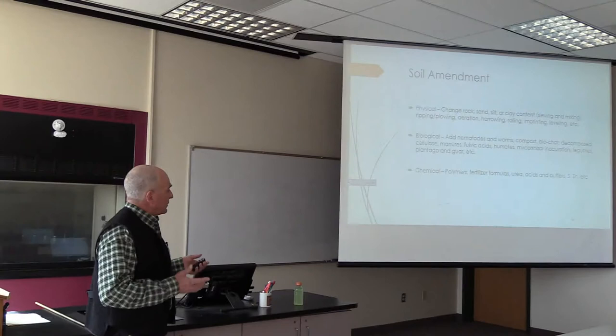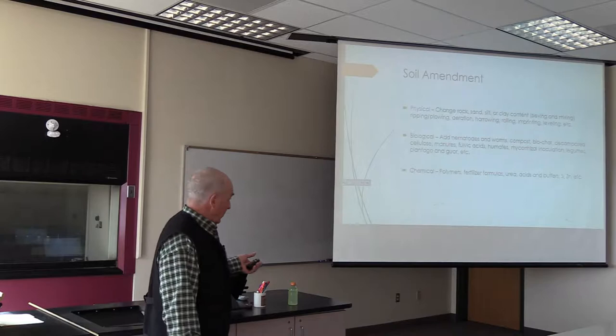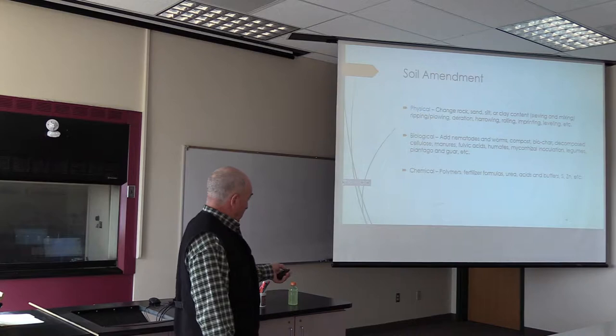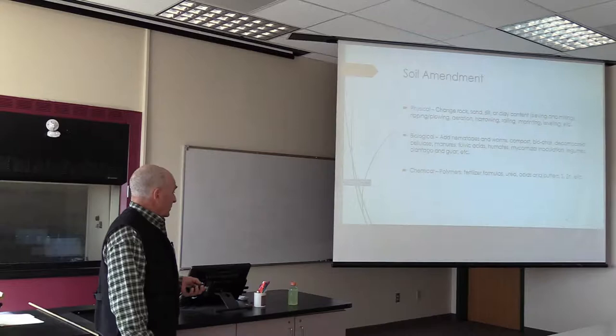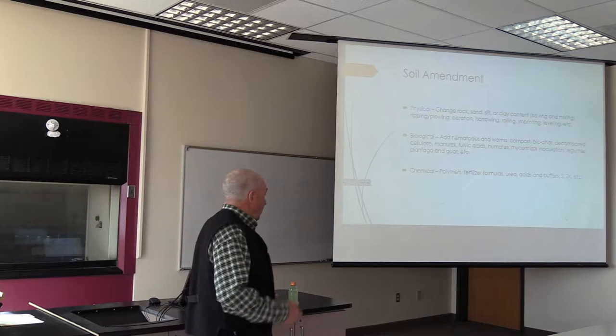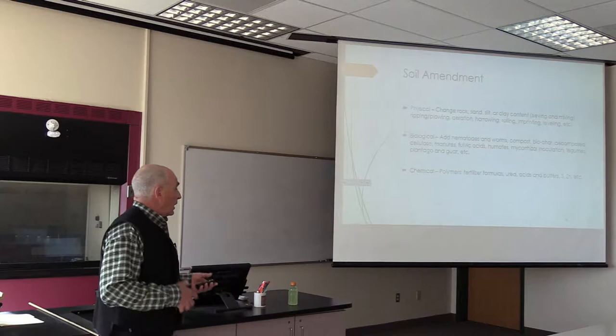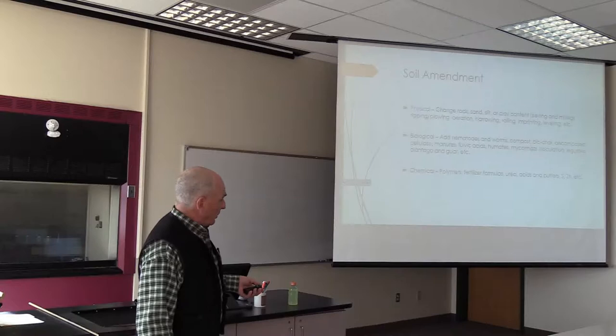For biological amendment, you can add micro and macro invertebrates, compost, biochar, fulvic acids, the complement of humates — those byproducts of decomposition of organic matter — and inoculations. You can complement with different plant species like legumes, which are nitrogen fixers. For chemical amendment, we use polymers, petrochemical fertilizers, acids, buffers, and trace elements.